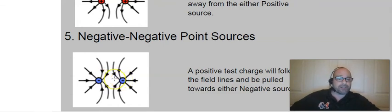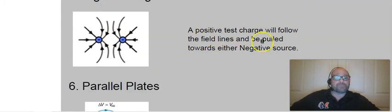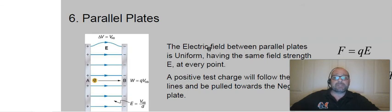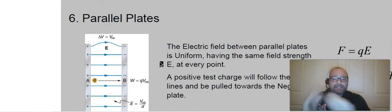Depending on which one it's closer to, so a positive test charge will follow the field lines and be pulled towards either negative source, but it really will go towards the one that it's closer to.